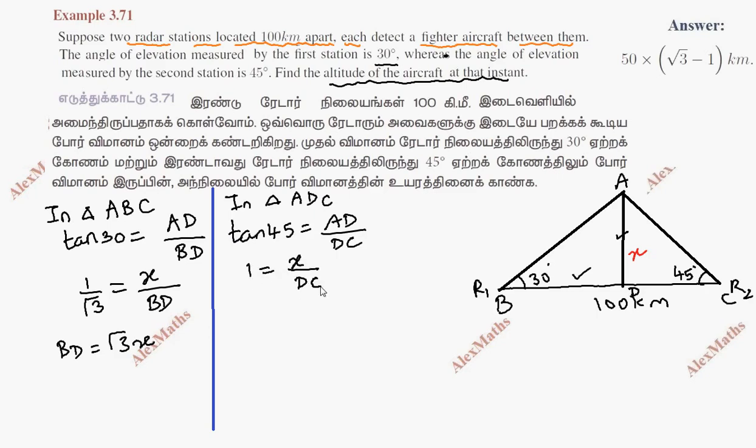BD plus DC equals 100. BD equals root 3x, plus x equals 100.